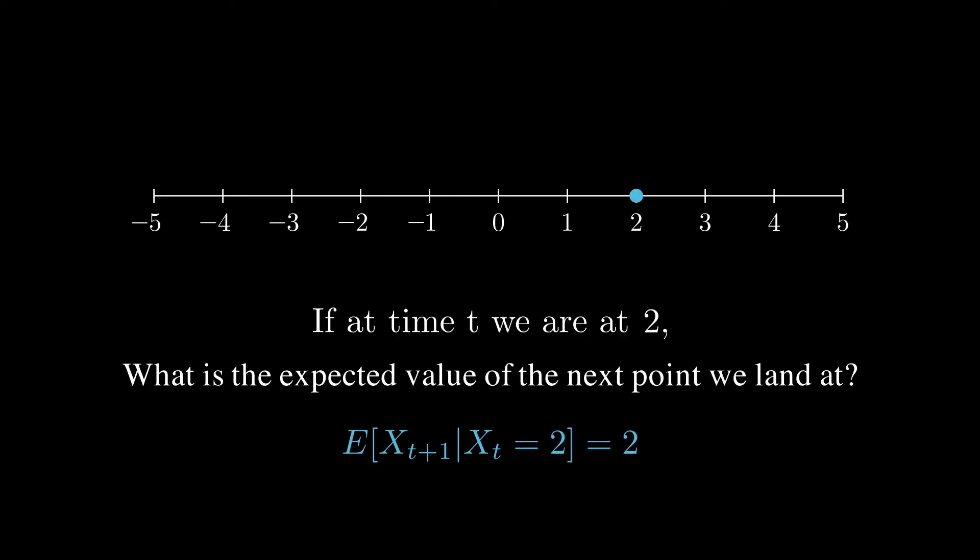Let's rewrite this as a conditional expectation. This expression should make sense. It's basically saying the expected value at time t plus 1, given that at time t we're at 2, is still 2. Let's change the expression just a little bit.